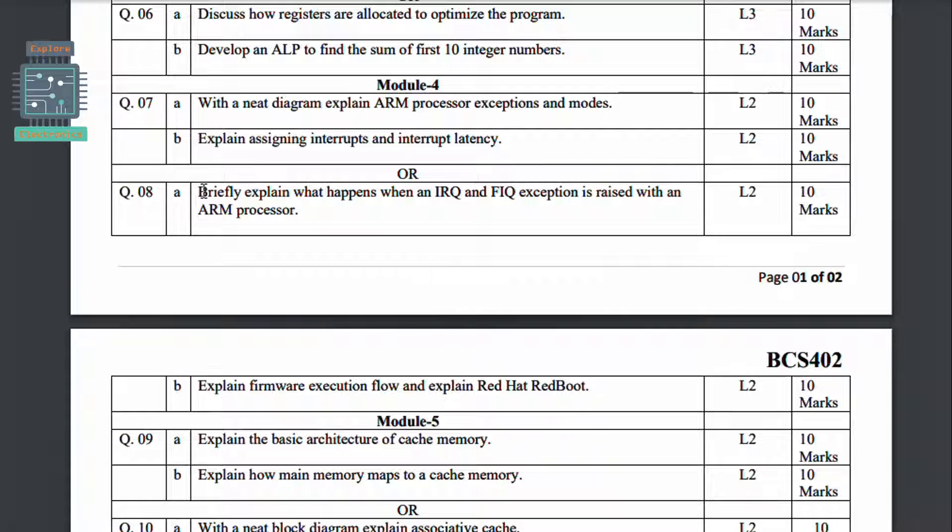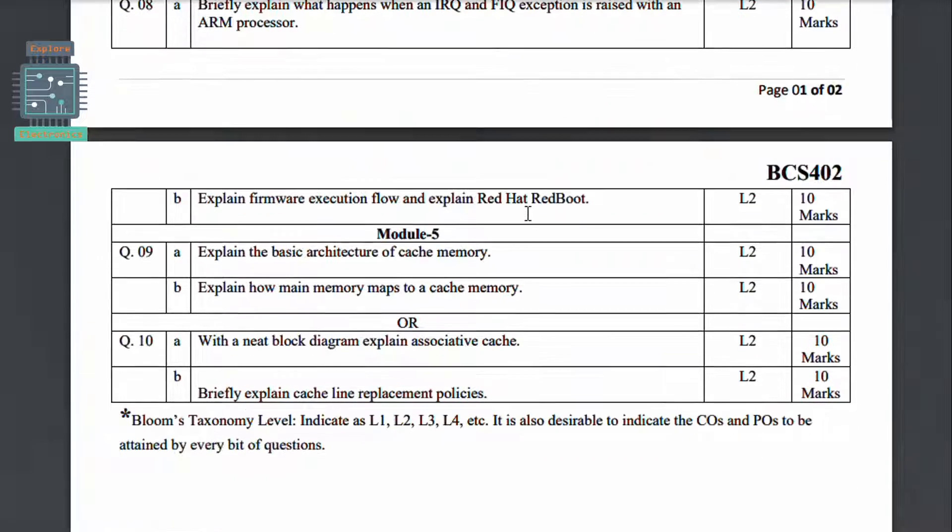In the eighth question they have asked briefly explain what happens when an IRQ and FIQ exception is raised with an ARM processor. So this is again related to interrupt. Briefly explain what happens when IRQ and FIQ exceptions are going to be raised. Explain firmware execution flow and explain Redhat Redboot. This is for 10 marks from Module 4.